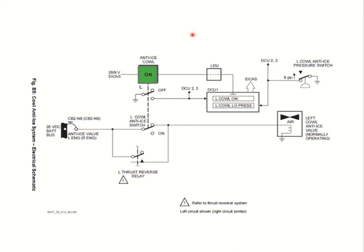The cowl anti-ice electrical diagram is straightforward with no controller involved - direct control from the switch. With the system switched off, power from the battery bus routes through the on/off switch in the off position and energizes the cowl anti-ice valve solenoid, closing it as long as air pressure is available. When you switch the anti-ice on, the switch interrupts the power supply to the solenoid, de-energizing it so the valve opens. To force close the valve when thrust reversers deploy, power is re-established to the solenoid via the thrust reverser relay, bypassing the switch.